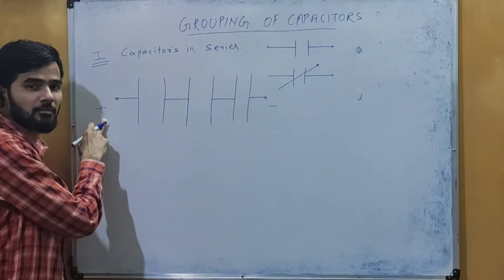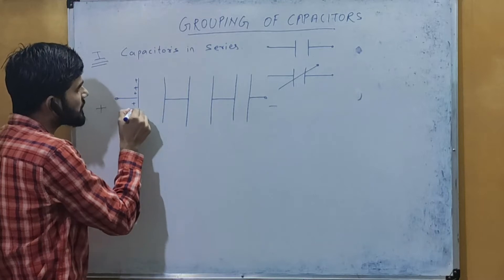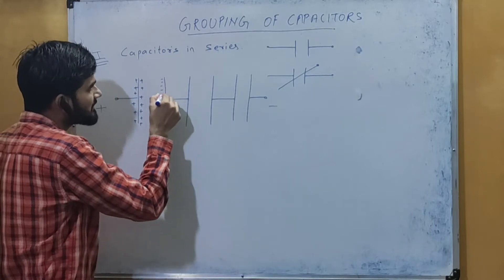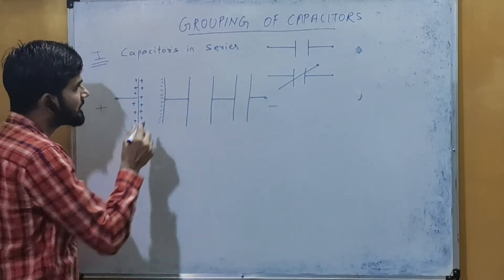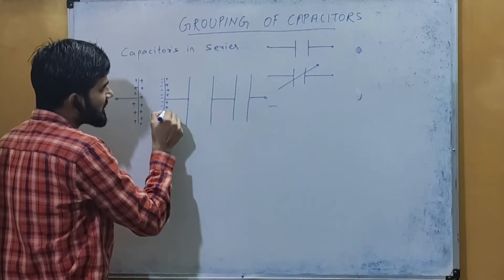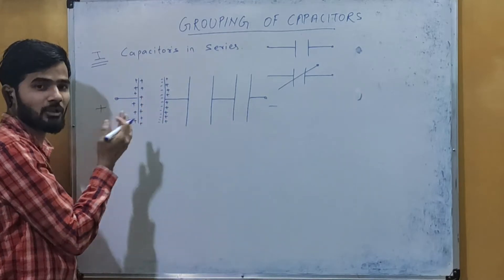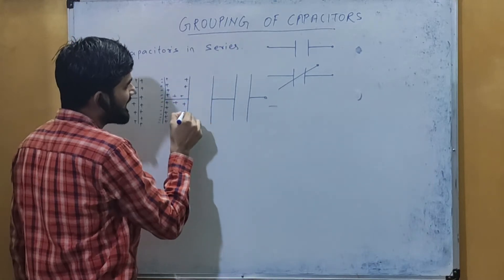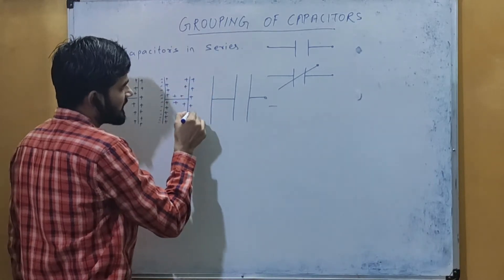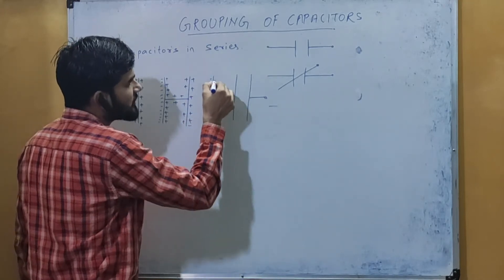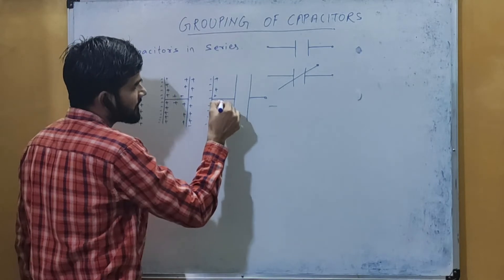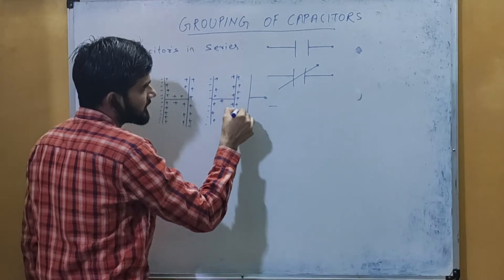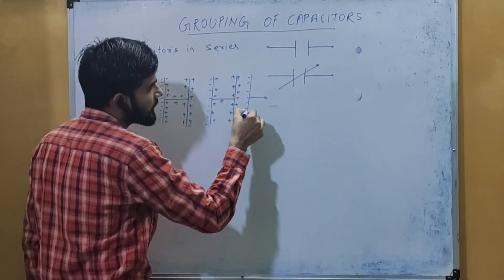When we connect to the positive terminal of the battery, this plate becomes positively charged, and because of induction this plate becomes negatively charged. Similarly, the next plate becomes positively charged by induction — all the negative charges coming to one side cause the positive charges to move to the other side. In the same way, the subsequent plates also become alternately positive and negative by induction.